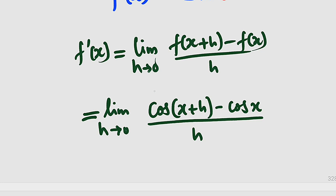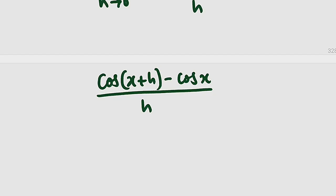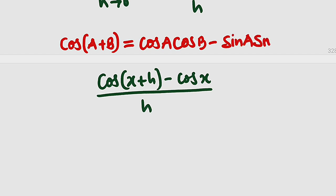Before we apply the limit, let me simplify this. But before then, let me remind you something. If you have cosine of a plus b, this is the same thing as cosine of a multiplied by cosine of b minus sine of a multiplied by sine of b. The only difference is that if you have addition here, you use subtraction here. If this is subtraction, you use addition here.